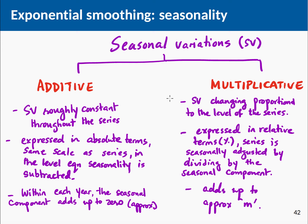You would use the multiplicative model when seasonal variations are changing proportional to the level of the series. For the additive model, the seasonal component is expressed in absolute terms and has the same scale as the series. In the level equation you subtract off the seasonal component. In the multiplicative model, the component is expressed in relative terms as a percentage, and the series is seasonally adjusted by dividing by the seasonal component rather than subtracting.